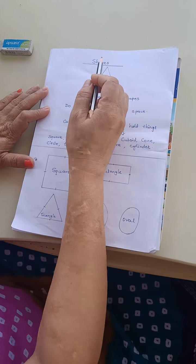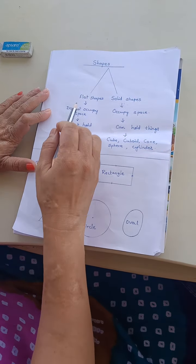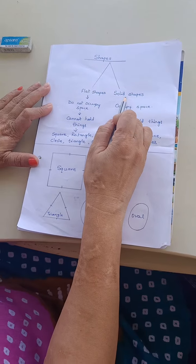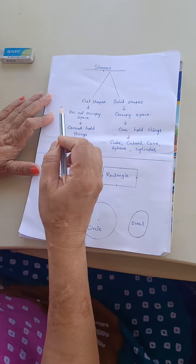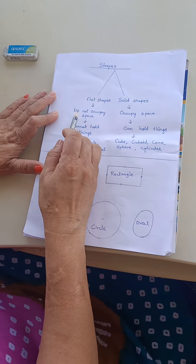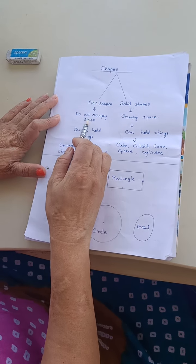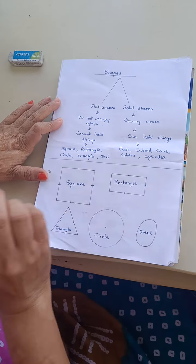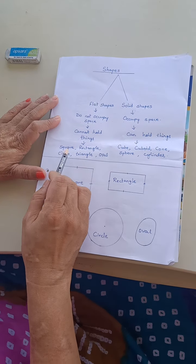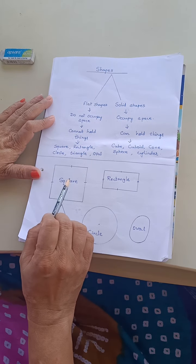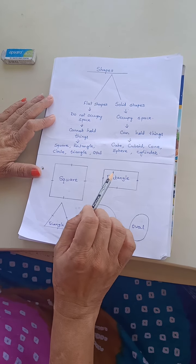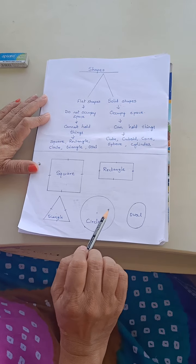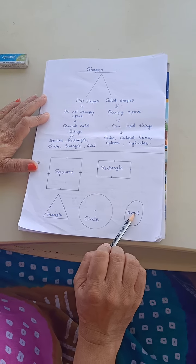Shapes are divided into flat shapes and solid shapes. Flat shapes are those which do not occupy space or they cannot hold things. The examples are square, rectangle, triangle, circle and oval.